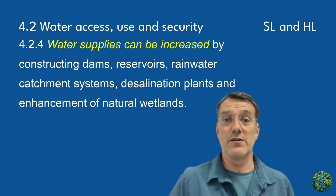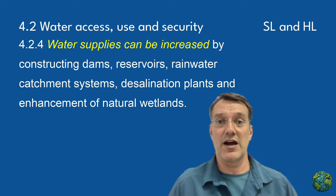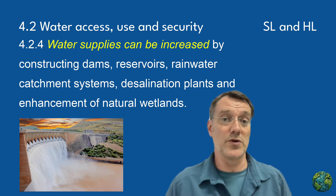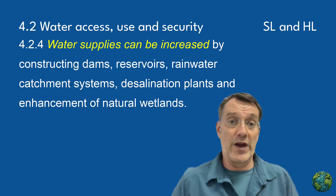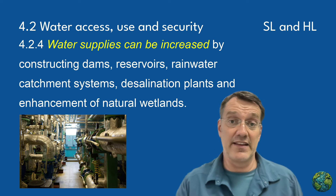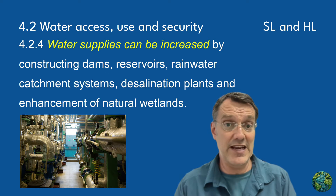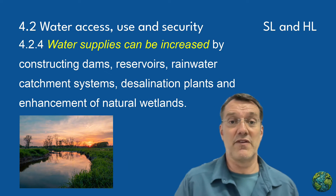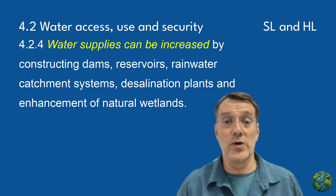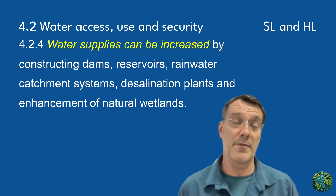Let's explore some strategies for increasing water supply. Each approach has different applications, costs, and environmental impacts. Constructing dams and reservoirs creates reliable water storage, but it disrupts river ecosystems. Rainwater catchment systems offer decentralized collection, but they have limited capacity. Desalination produces fresh water from seawater, but it requires significant energy resources. Enhancing natural wetlands provides ecosystem services alongside water storage. Regions typically employ several of these complementary strategies based on their geography, climate, and economic resources.